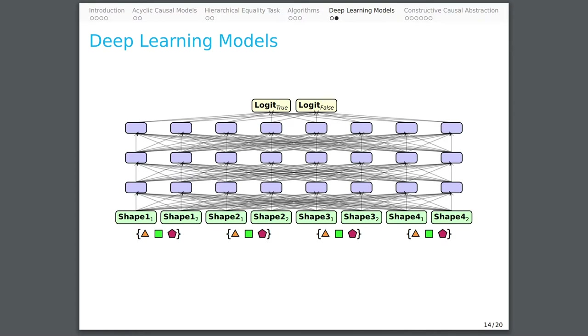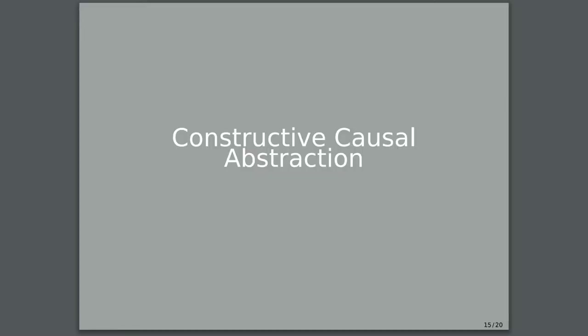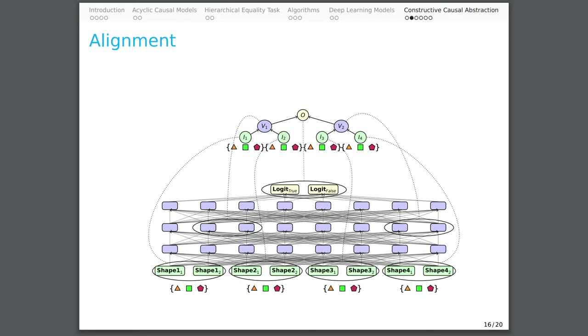Deep learning models consist of fully connected neural networks that are difficult to interpret or explain. A theory of causal abstraction allows us to operationalize the question of whether our deep learning model implements our tree-structured algorithm. For our running example, the input and output neurons of the deep learning model have a predetermined alignment. The two intermediate high-level variables are free to be aligned with sets of neurons in the low-level model. In practice, we would search over potential alignments, but for this example, we will simply use the alignment shown on the screen.